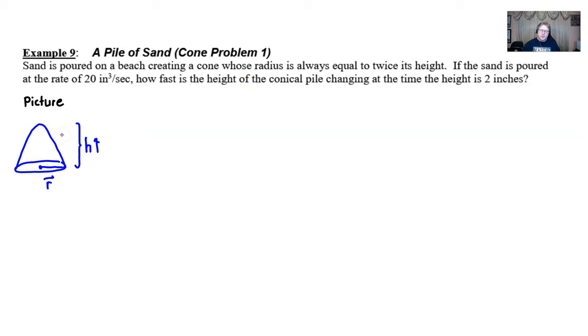We're going to go ahead and start identifying some of our information. Our given is typically going to be some kind of rate in the problem. I see 20, it is a rate, and it is the rate of the sand that's being poured.